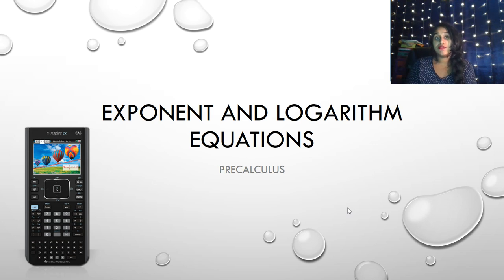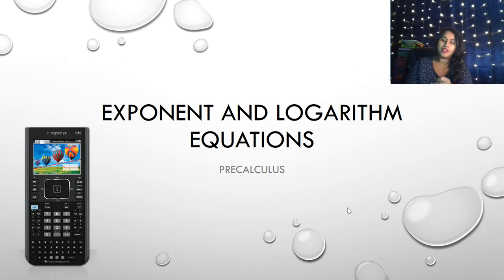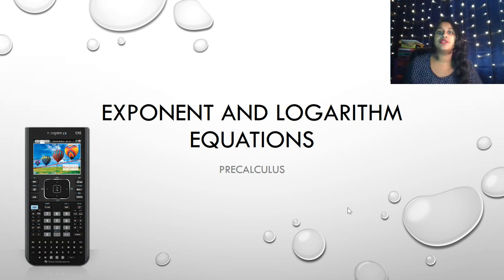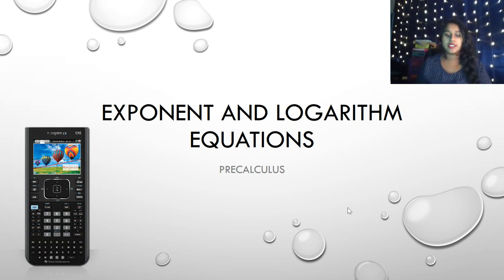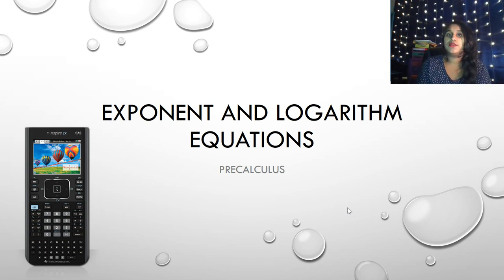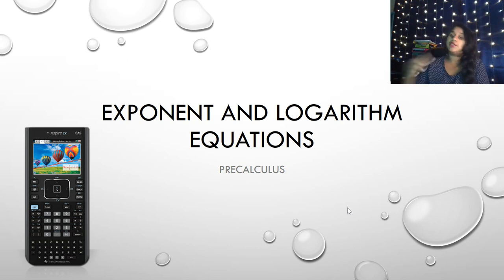Welcome to our final video in unit 4, section 4.4. We are talking about exponential and logarithmic equations. We're going to get through a lot of different equations. We're going to use something called a one-to-one property and a quadratic. But beyond that, everything else we're using are the same basic properties and rules that we've been using in all these videos. It is a lot to get through, so I'm asking that you just persevere and keep on trying.